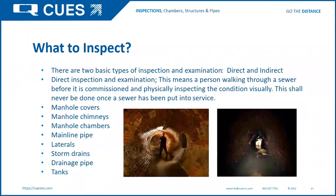What do we inspect? There are two basic types: direct and indirect inspections. Direct inspection means a person walking through a sewer before it is commissioned and physically inspecting the condition — this shall never be done once a sewer has been put into service. We're looking at manhole covers and physical structures, the rim for I&I issues, manhole chimneys, manhole chambers, mainline pipe, laterals, storm drain, drainage pipe, and tanks.